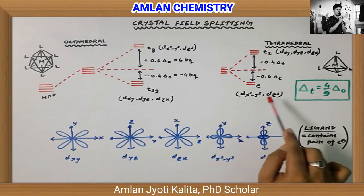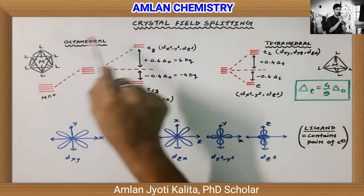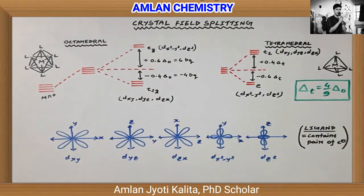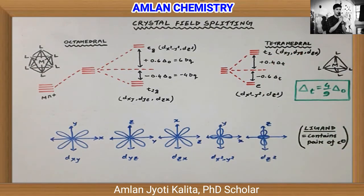The energy difference for dx²-y² and dz² is 0.6ΔT. For octahedral, we have EG and T2G with G subscript. For tetrahedral, simply E and T2 without G. This is related to symmetry elements.